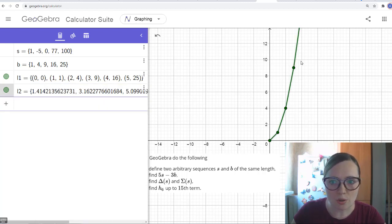You see the sequence of segments from (0,0) to (1,1), from (1,1) to (2,4), from (2,4) to (3,9), and so on. So this is about definition of sequences.